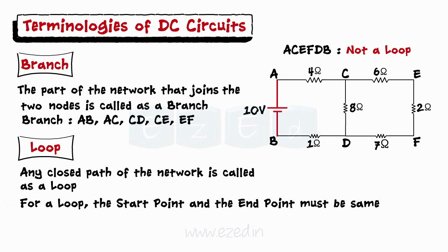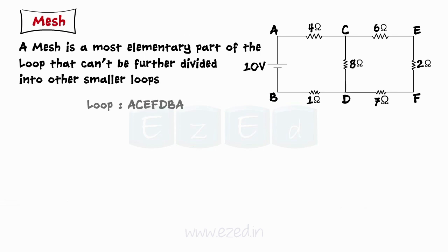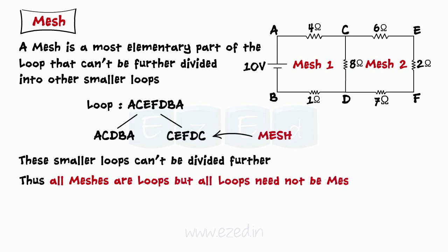A mesh is the most elementary part of the loop that can't be further divided into other smaller loops. Here, the ACEFDB A loop can be further divided into smaller loops as ACDB A or CEFD C. But these smaller loops can't be divided further. Thus, ACDB A or CEFD C is called as a mesh. Therefore, all meshes are loops but all loops need not be meshes.